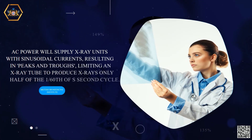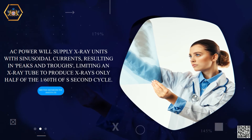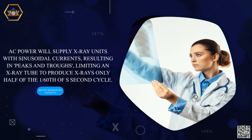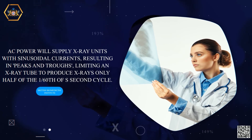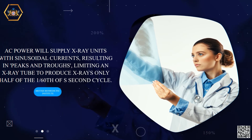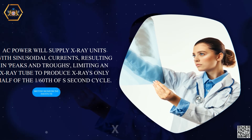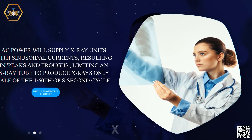AC power will supply X-ray units with sinusoidal currents, resulting in peaks and troughs, limiting an X-ray tube to produce X-rays only half of the 1/60th of a second cycle.